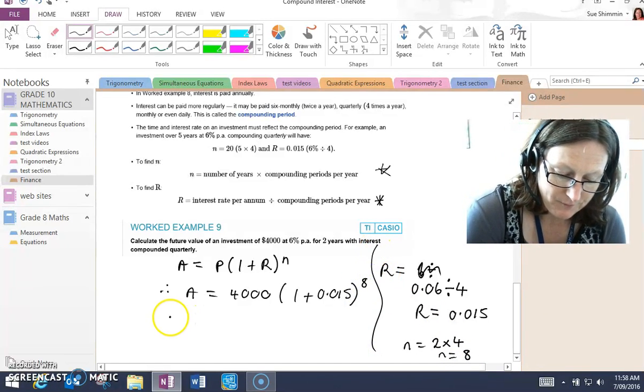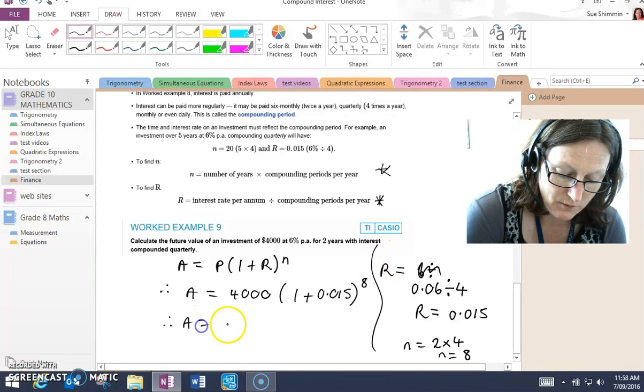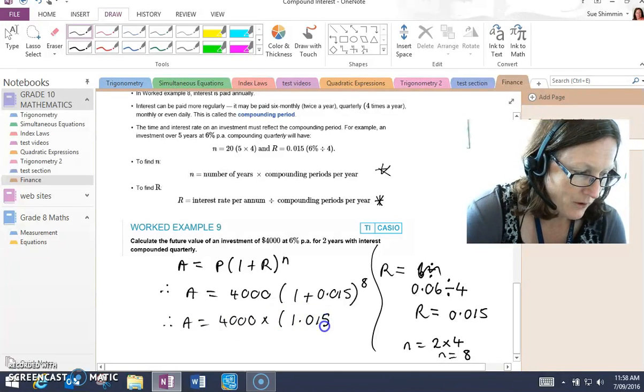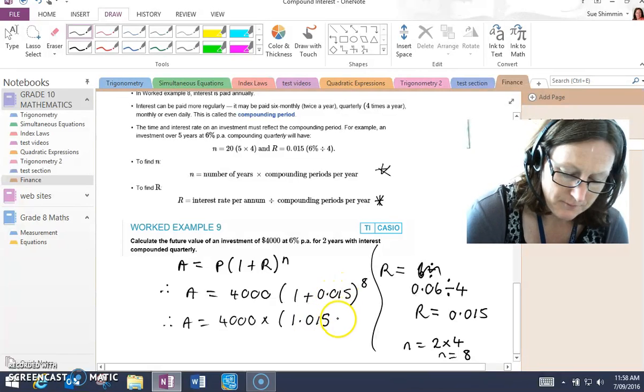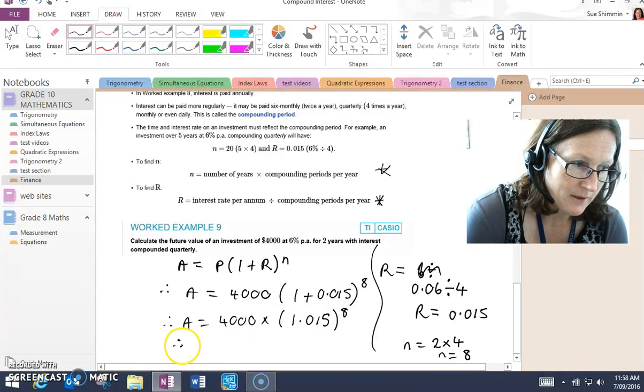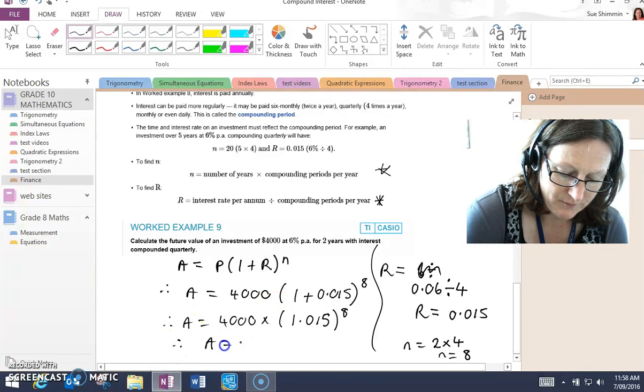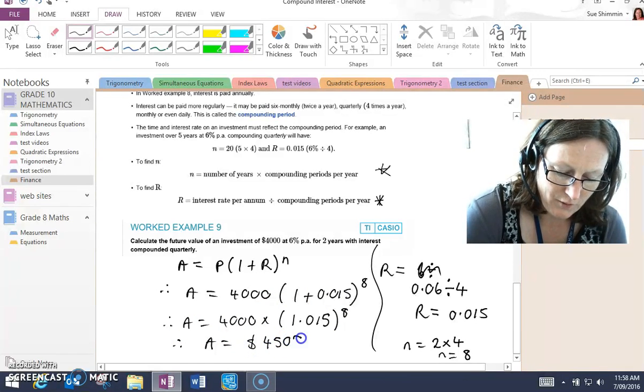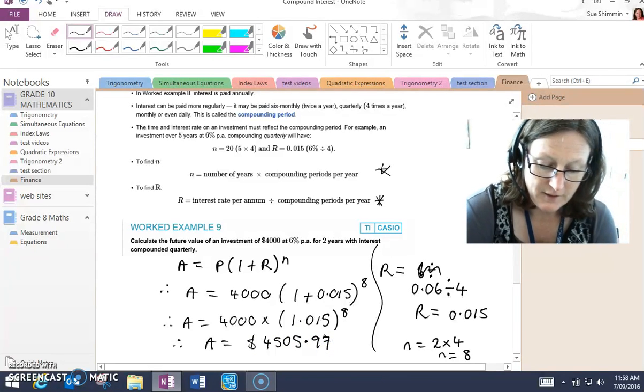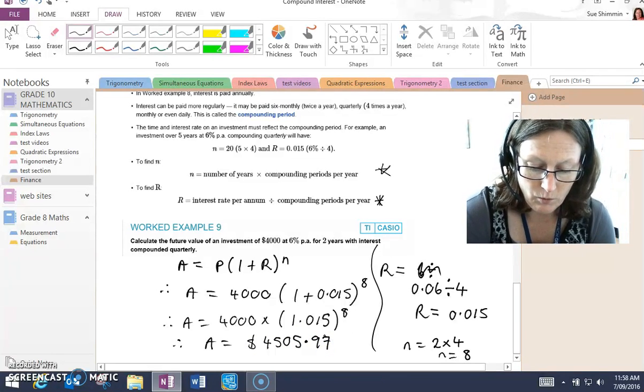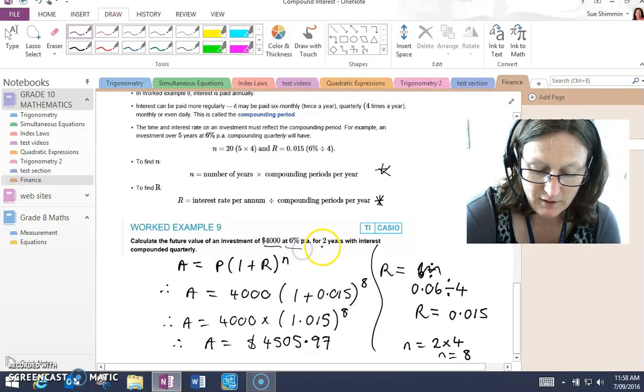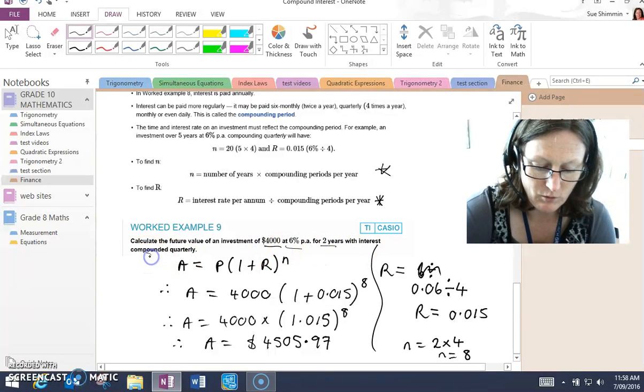Then A equals 4,000 times 1.015 to the power of eight. Put it into your calculator. And $4,505.97 is how much money you'll have if you put $4,000 at 6% for two years compounded quarterly.